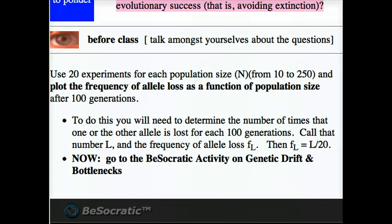You're going to calculate the number of times in that 20 that one or the other allele was lost. You divide that number by 20, and that's the frequency of allele loss.